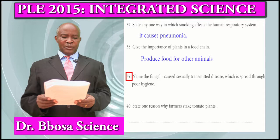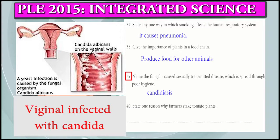Question 39: Name the fungus that causes the sexually transmitted disease which is spread through poor hygiene. That is candidiasis.